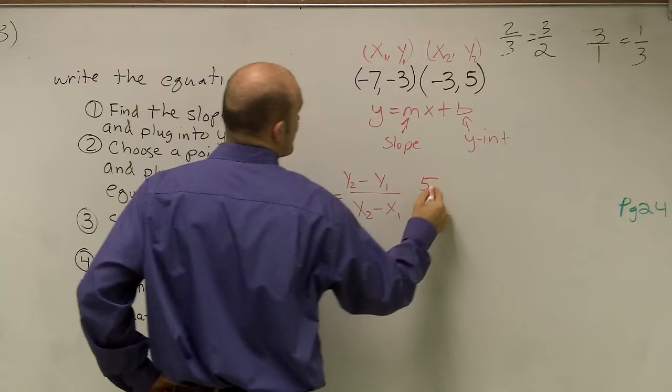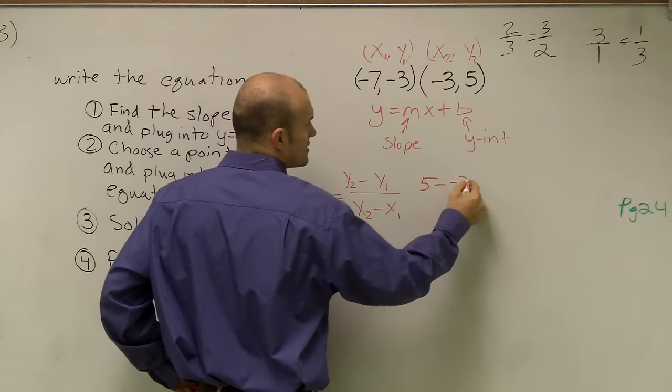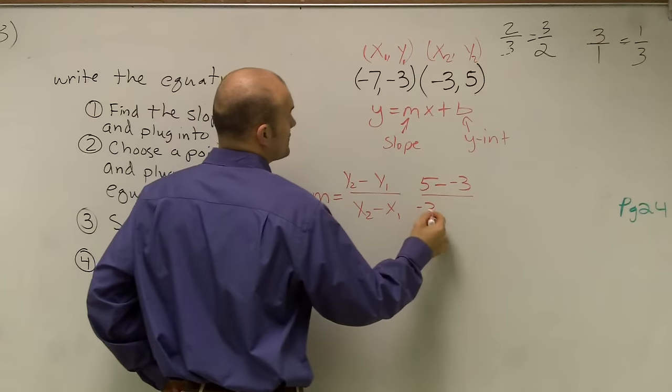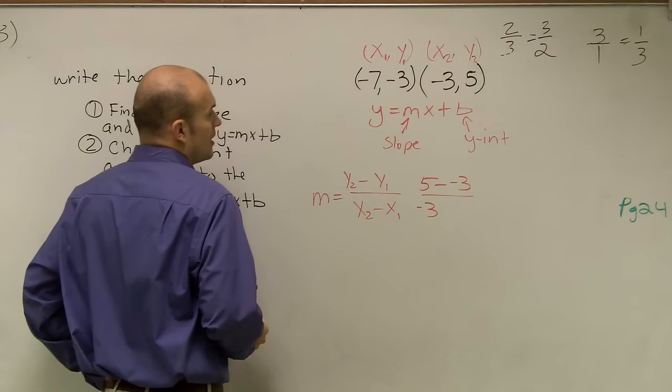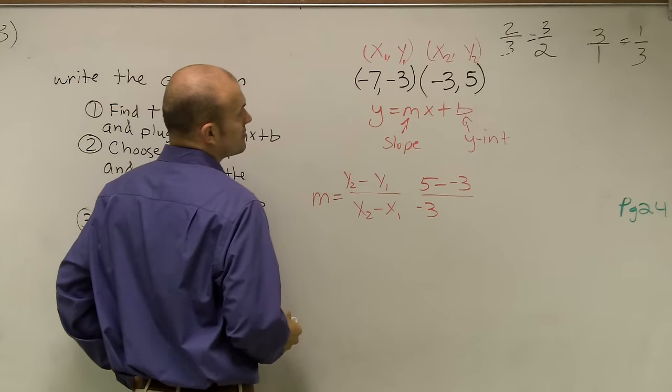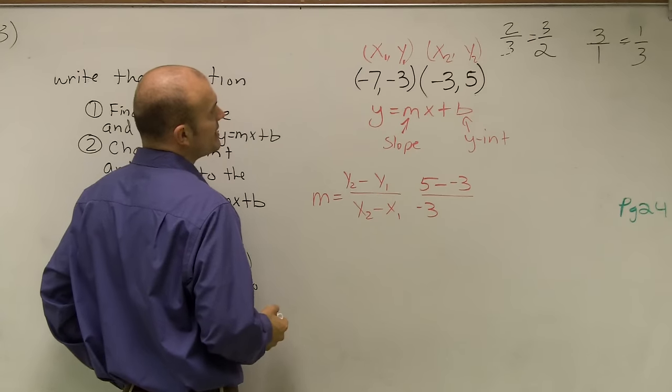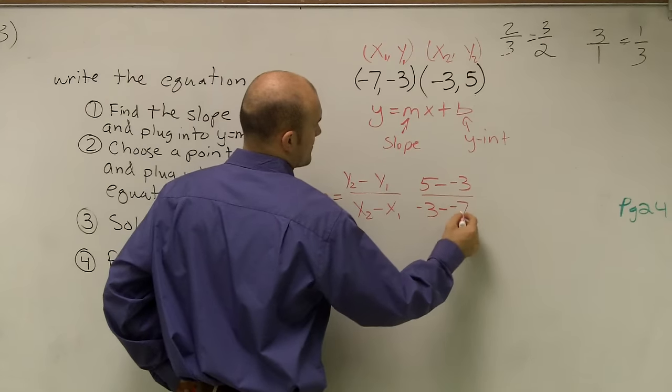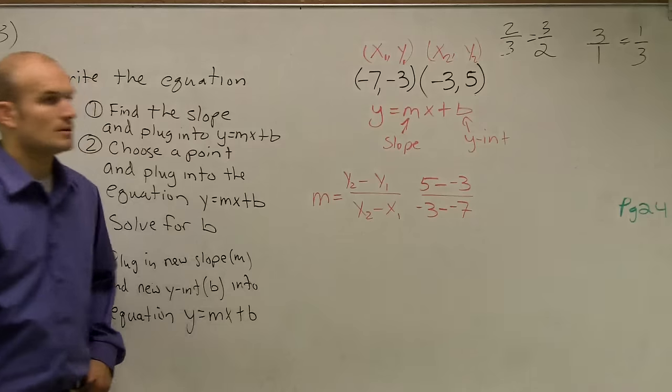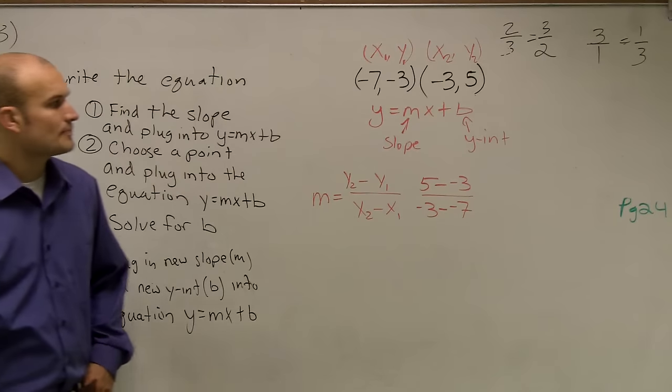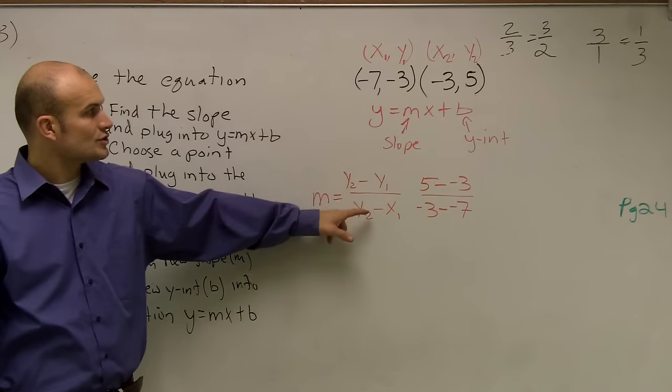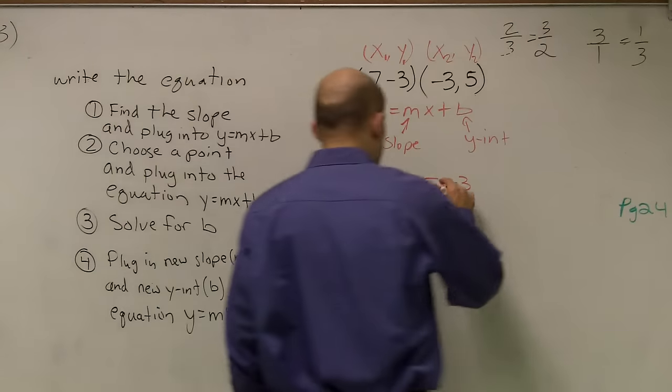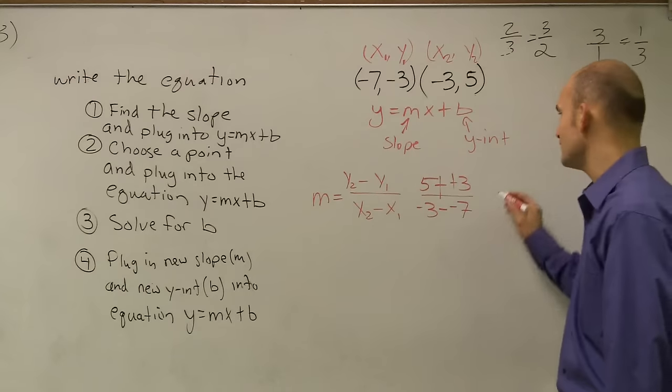So y2 is 5, minus y1 all over x2, which is a negative 3, minus x1, which is a negative 7, okay? Remember, it's your change in y over your change in your x's. So therefore, 5 minus a negative 3, that's a double negative, becomes positive, which is 8.